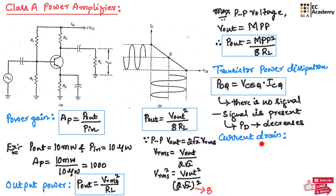Now let us understand current drain. The DC voltage source connected to an amplifier has to supply DC current to the amplifier. This DC current has two components: the biasing current through the voltage divider, and the collector current through the transistor. This DC current is called the current drain.